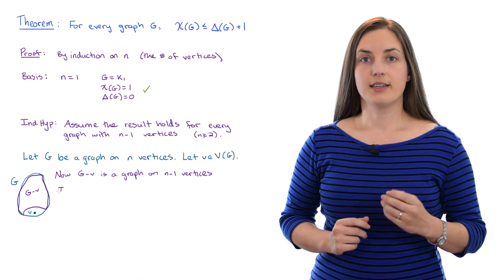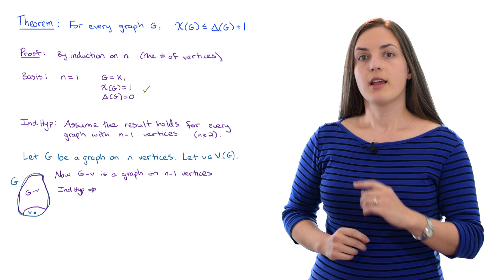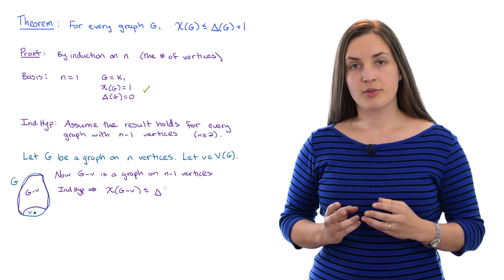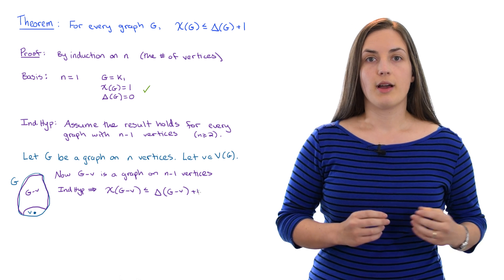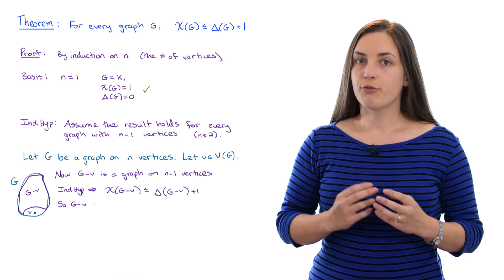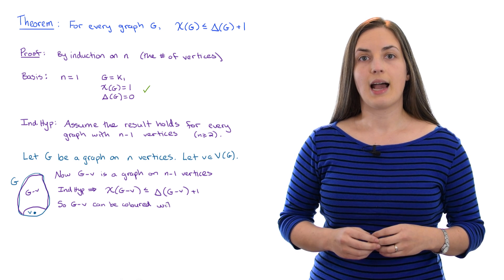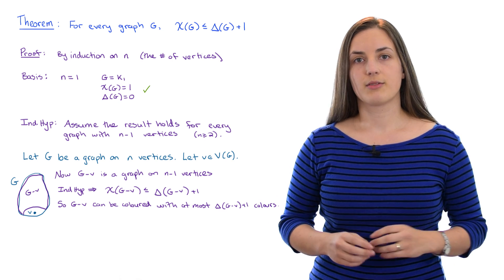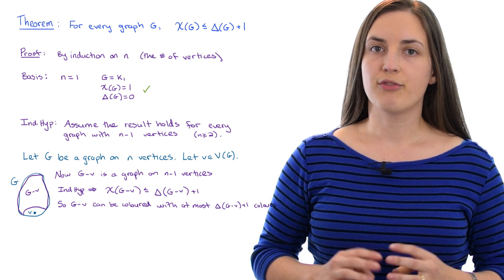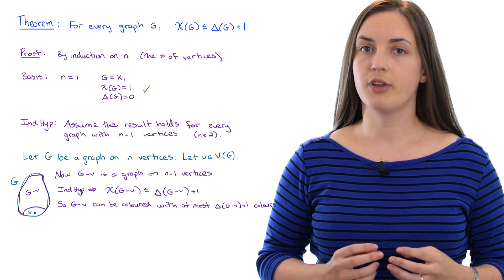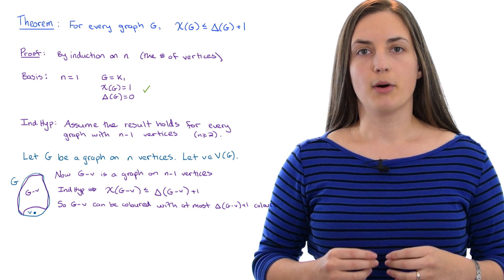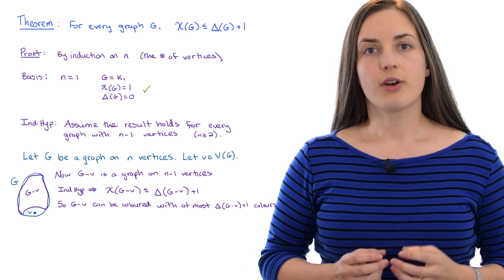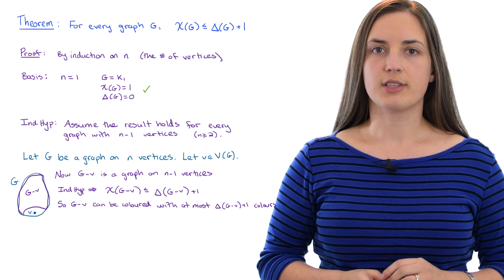The inductive hypothesis tells us that the chromatic number of G without V is at most the maximum degree of G without V, plus one. So this means that the graph G without V can be colored using at most the maximum degree of G without V plus one colors. Now imagine that you have a coloring of that smaller graph G without V, using at most the maximum degree of that smaller graph plus one colors. Next we want to worry about how we can color that last vertex V so that we will have a coloring of G.